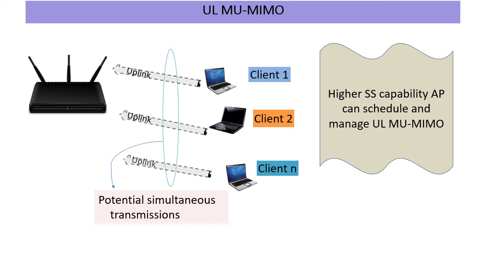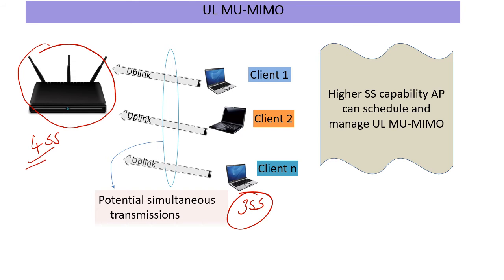Uplink MU-MIMO was recently introduced in 802.11ax and products are getting announced. The same issue applies — clients are going to be one or two SS — but now the AP can schedule multiple clients at the same time on the same bandwidth. That can help as uplink traffic in a small room with good RF conditions starts increasing, which is happening as we spend more time indoors. Similarly, if you have a 4 SS or 8 SS AP, even if you're serving 3 SS in total, that will give you better receive performance overall. So you can have better DL-MU-MIMO, better UL-MU-MIMO, and the ability to serve multiple clients simultaneously.